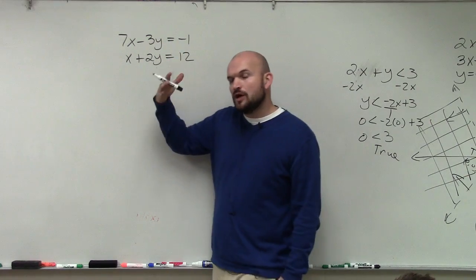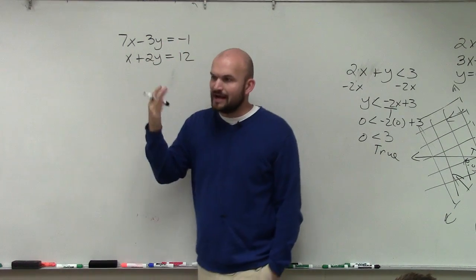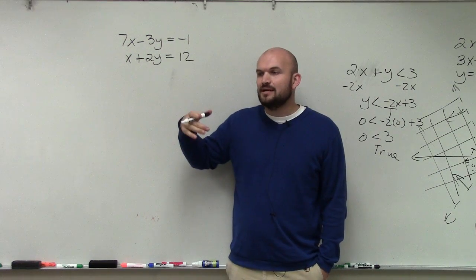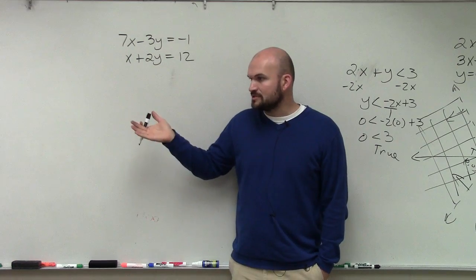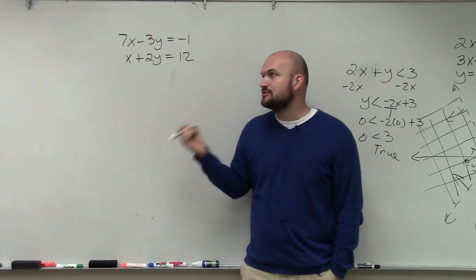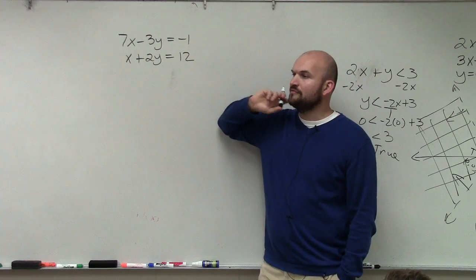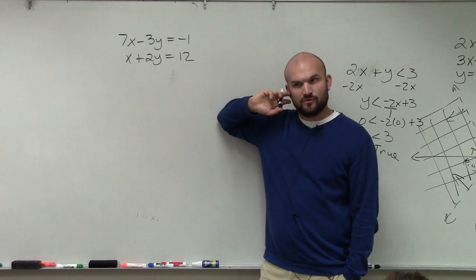So when you're solving a system by substitution, what we have to do is find the value of one of the variables. Basically, what we have to do is solve for one of the variables. And the best way to do that is to choose a variable that has a coefficient of 1 or negative 1.